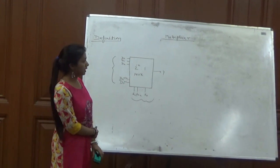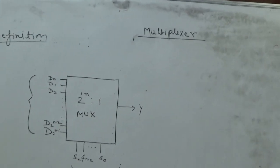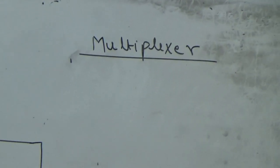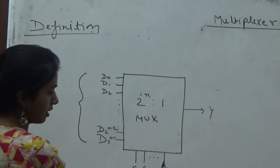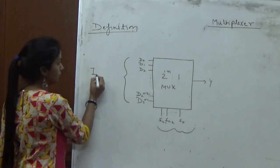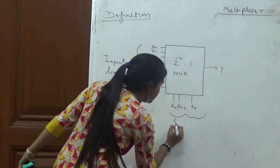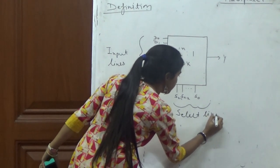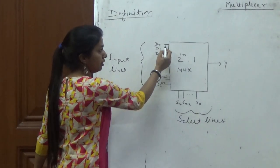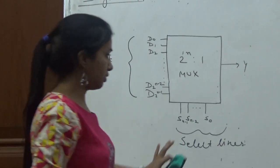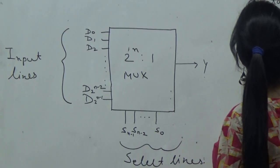Hello everyone, today we will discuss multiplexer. What is a multiplexer? A multiplexer is basically a combinational circuit that selects binary information from many input lines and directs it to the output. The operation of the multiplexer is controlled by the select lines. The function of the multiplexer is to select one of the many input lines and direct it to the output. It is also called a data selector.